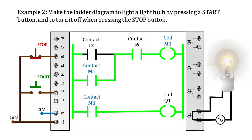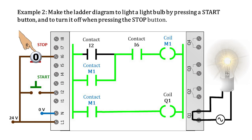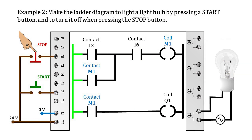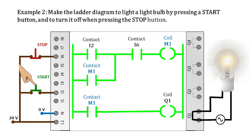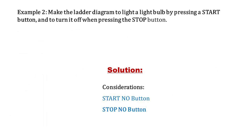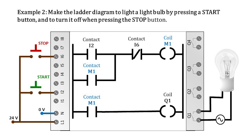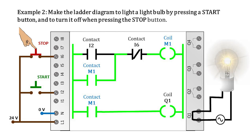If the start button is released, it sends a logical 0 to contact I2, causing it to return to its default state — it will deactivate or open. But coil M1 will remain active since its contact M1 is active thanks to the self-holding or latching that is generated. To turn off the bulb, it is only necessary to deactivate the M1 coil by pressing the stop button, which sends a logical 0 to the I6 contact, causing it to return to its normal state — by default it is normally open. If the button is then released, it will send a logical 1 and activate contact I6 again, returning the entire process to the initial conditions.